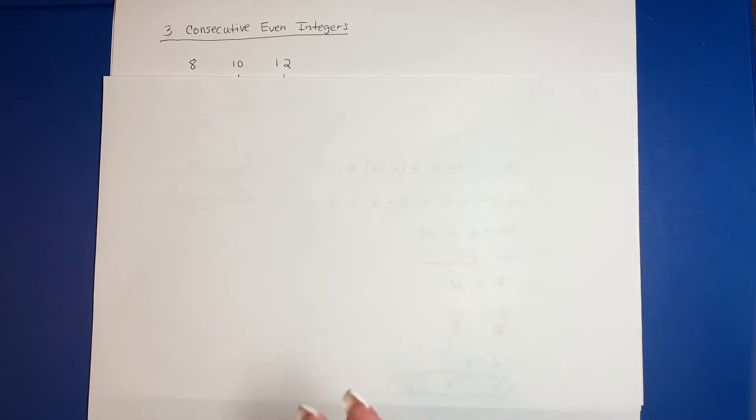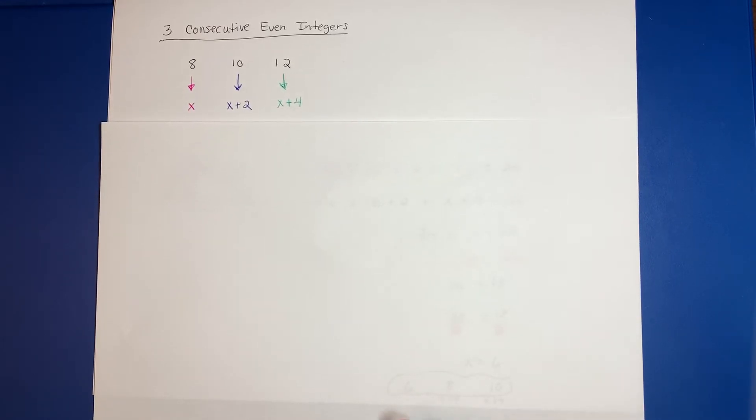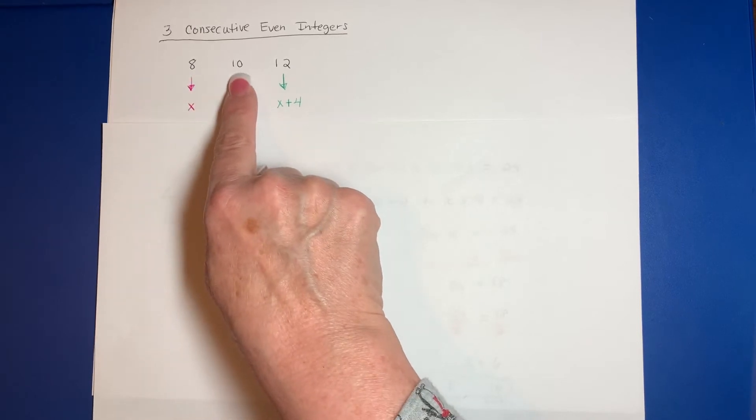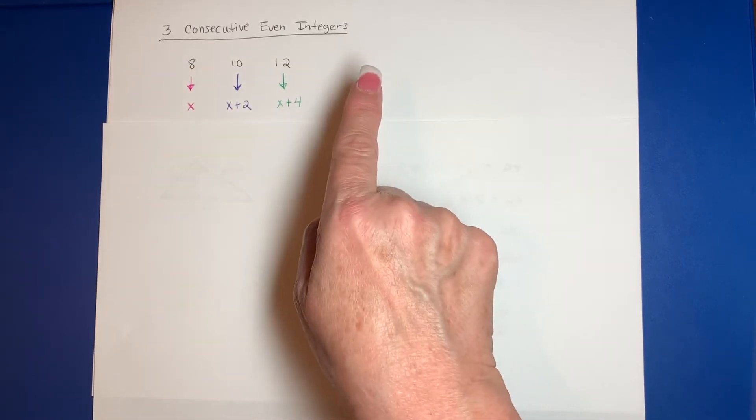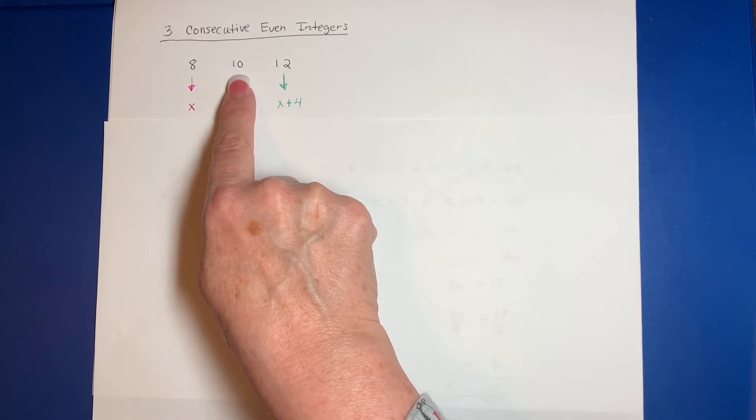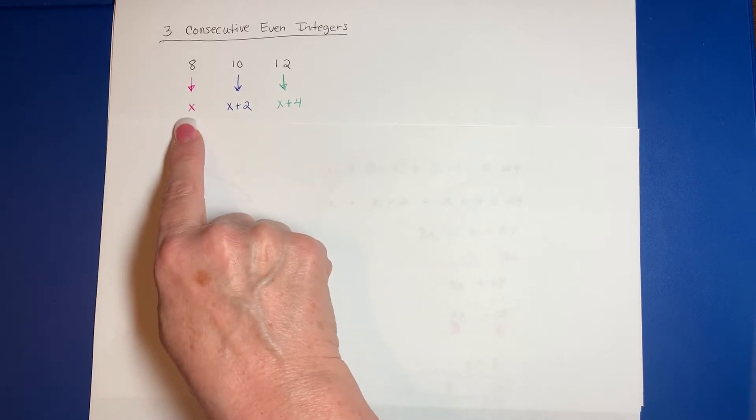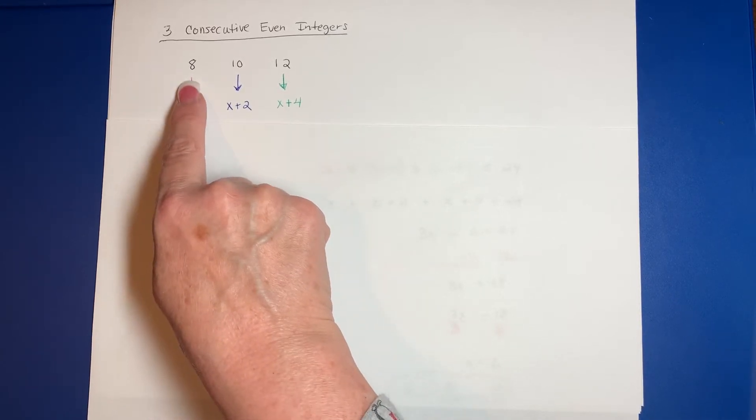So I would say, let's let the 8 be X. Well, if they're even numbers, they're spaced two apart. So whatever the next even consecutive integer is, it's going to be two larger than your first one. If this one's 8, 8 plus 2 would be 10.